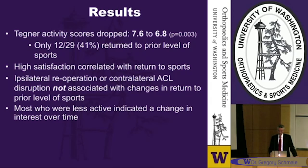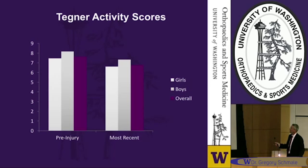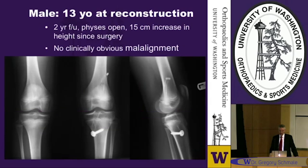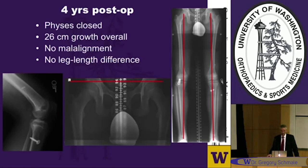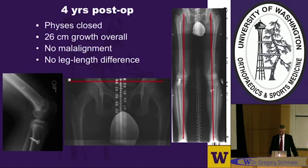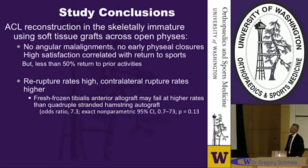This showed a drop of about one level on the Tegner activity score from pre-injury to most recent activity level. One of Dr. Larson's patients, reconstructed at age 13, at two years post-op was growing well with physes still widely open and good alignment. At four years post-op, the physes were closed, there was no leg length difference, and the mechanical axes were maintained — he grew a total of 26 centimeters overall. We identified no angular malalignments in this small group and no early physeal closures, but a lower than expected return to sports. Less than 50% return to sports for preteen and teenage athletes is supported in the literature. The re-rupture rates were high, contralateral rupture rates were even higher, and there was a trend towards failure of allografts.